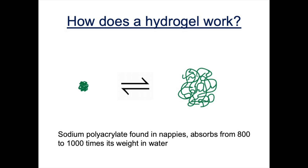These materials are incredible. Sodium polyacrylate, which is found in nappies, can absorb from 800 to 1,000 times its weight in water. Being able to absorb or expel large quantities of liquid, depending on the temperature, pH, or conditions, means it has applications in drug delivery — where you might be able to control the amount of a drug being released into the body if you know certain conditions such as temperature and pH. It also has the ability to absorb toxic chemicals.